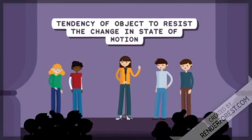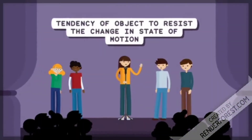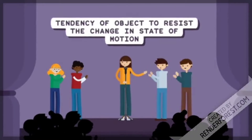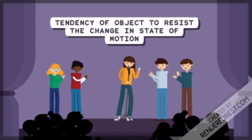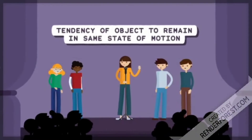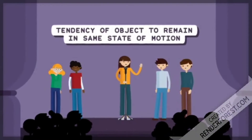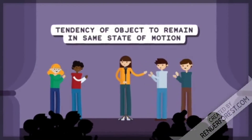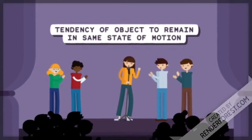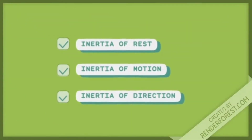What is inertia? The tendency of an object to resist the change in its state of motion is called inertia. Or, the tendency of an object to remain in the same state of motion is called inertia. Inertia is of three types: inertia of rest, inertia of motion, and inertia of direction.